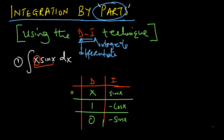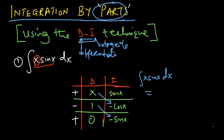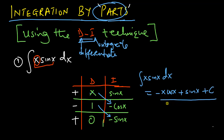Then we put alternating positive and negative signs at the edge of the table, beginning with positive, then negative, and so on down the table. The last step is to multiply the adjacent columns — so X times negative cosine X, and 1 times negative sine X. The integral of x·sin(x)dx is going to be: positive X times negative cos X gives negative X cos X, and negative 1 times negative sine X gives positive sine X, plus a constant of integration.